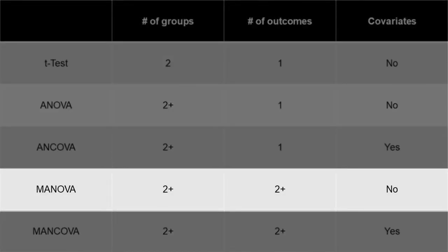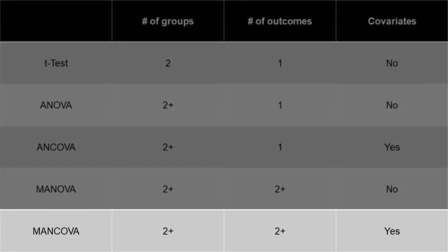In MANOVA — multivariate analysis of variance — you can, as in ANOVA, compare multiple groups. In contrast to ANOVA, you can simultaneously analyze several outcome variables, but you cannot include covariates or additional control variables. If you would like to do that, then you would run a MANCOVA — a very powerful statistical analysis where you can compare multiple groups, multiple outcomes, and also consider multiple covariates.